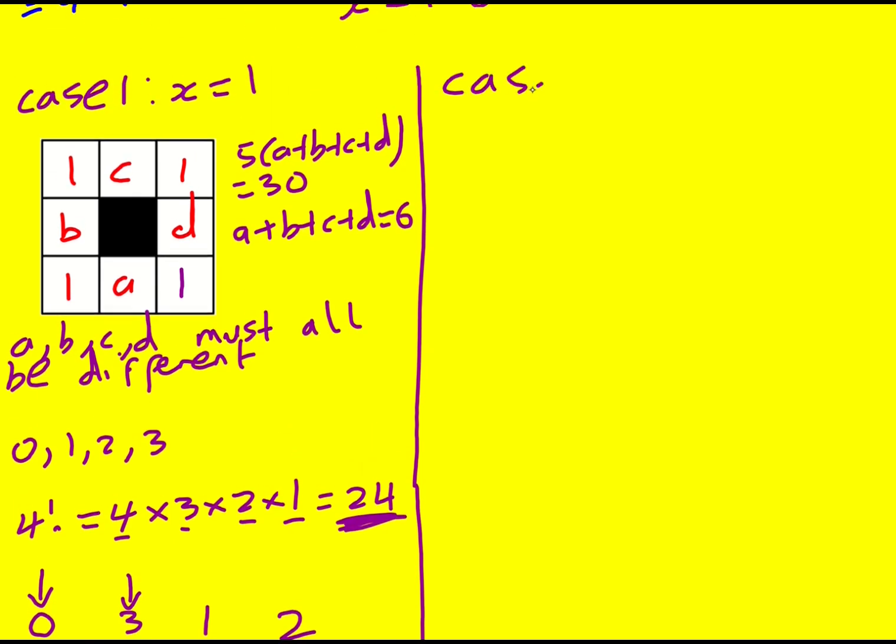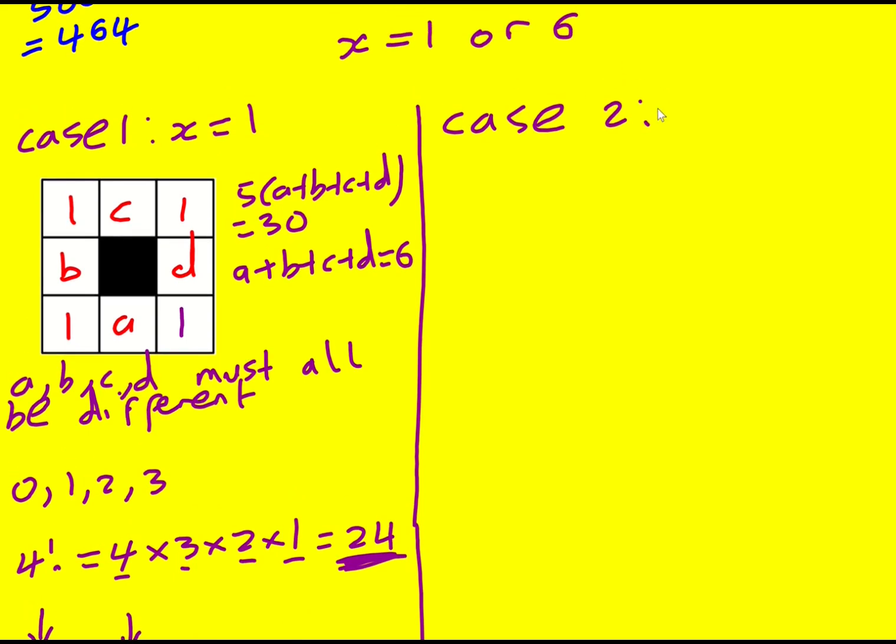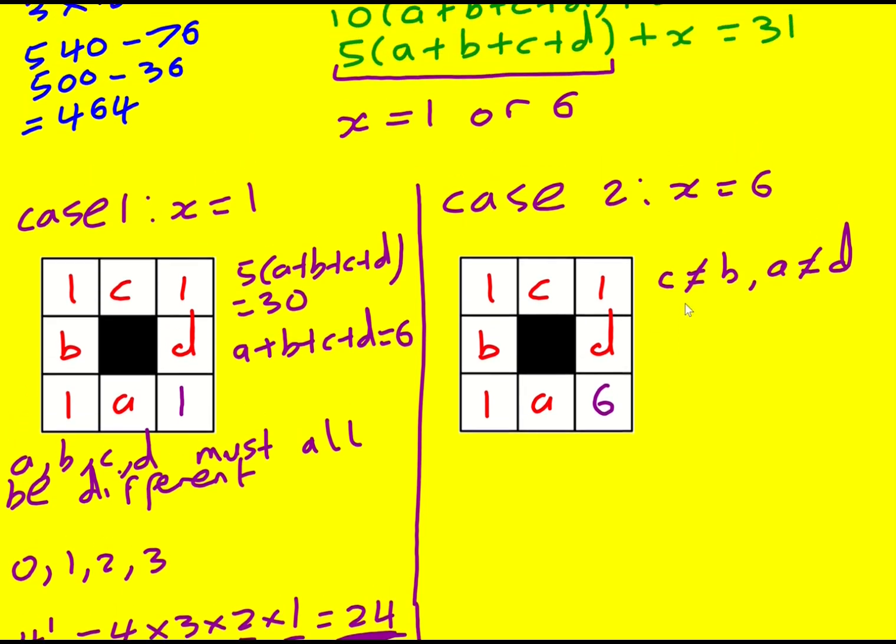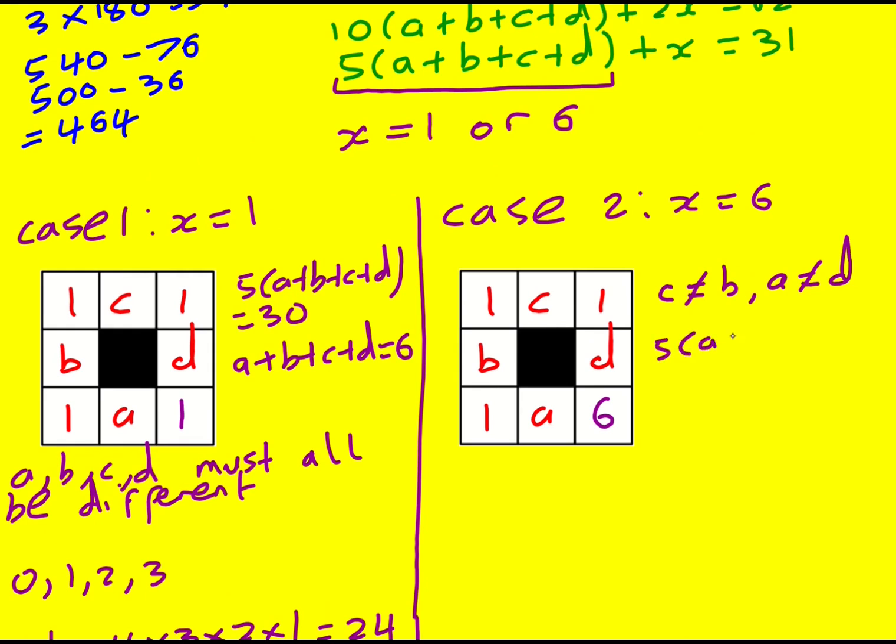Let's take a look at case 2. And remember, this was x equaling 6. Note, first of all, that we can have some of them different. We just cannot have c equal to b, and we can't have a equal to d, because otherwise you get the same number. So looking at the equation above again, now we would subtract 6. So we'd get 5 lots of a plus b plus c plus d equaling 25, which means a plus b plus c plus d is equal to 5. So we're not allowed to have three things the same, because then we'd either have c equal to b or a equal to d. But we can have two things the same.